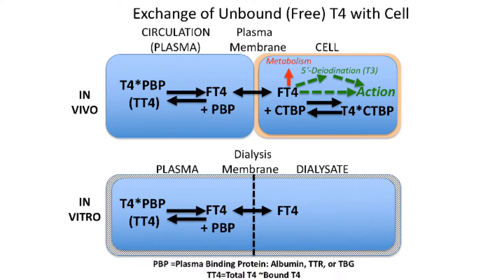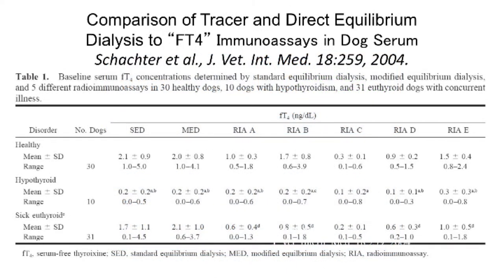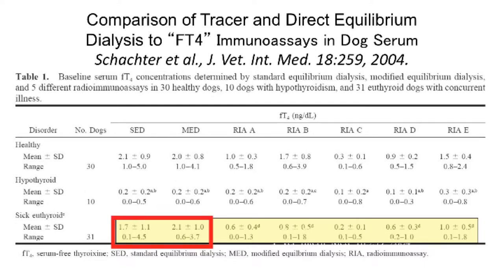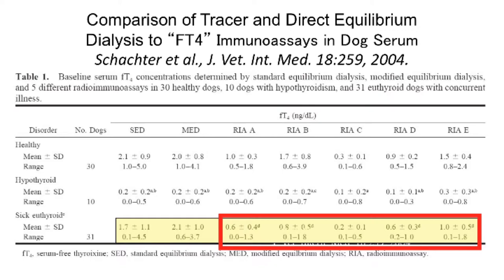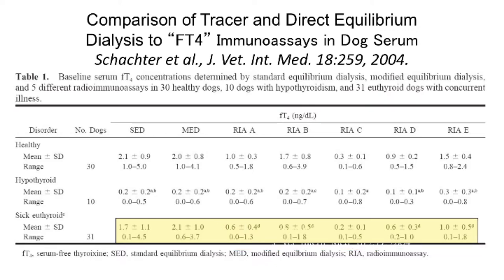Most of the time we're looking at using a very sensitive T4 assay and measuring the dialysate. This is a very busy graph, but I want to highlight what's down on the bottom. A study done 15 years ago showed that standard equilibrium dialysis and modified equilibrium dialysis — the two columns on the left in yellow — are probably the true values of free T4. Various immunoassay procedures shown to the right all show values that are much, much lower.